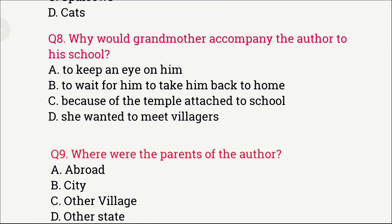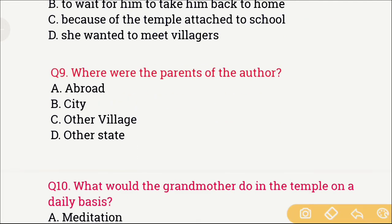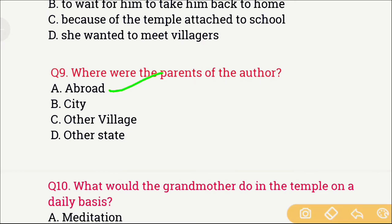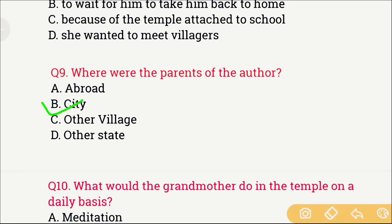Question number 9: Where were the parents of the author? The options are: A) Abroad, B) City, C) Other village, and D) Other state. The right answer is option B, which is city — meaning the parents of the author were in the city while the author lived with his grandmother in the village.